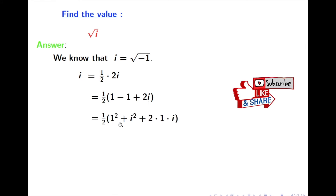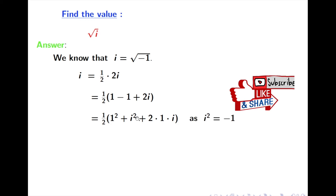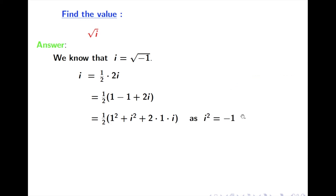Now we write 1 as 1², and we write minus 1 as i², since we know that i² equals minus 1. We also write 2i as 2 times 1 times i. Now we have 1² plus i² plus 2 times 1 times i, which is in the form of a² plus b² plus 2ab — that is, the formula for (a + b)².